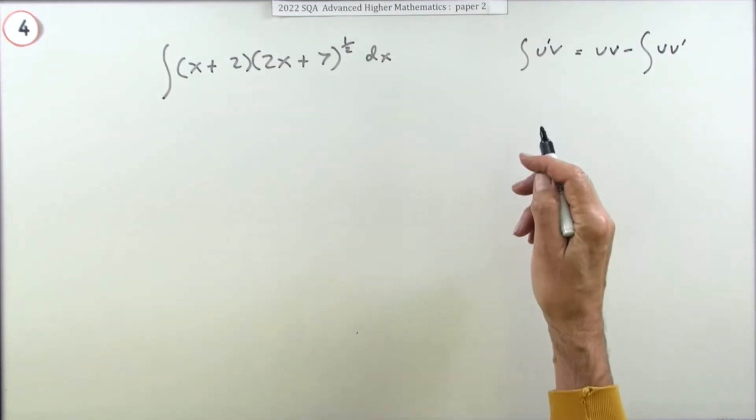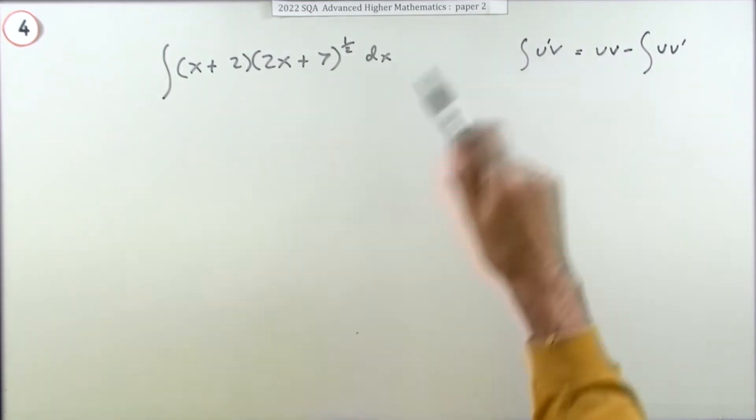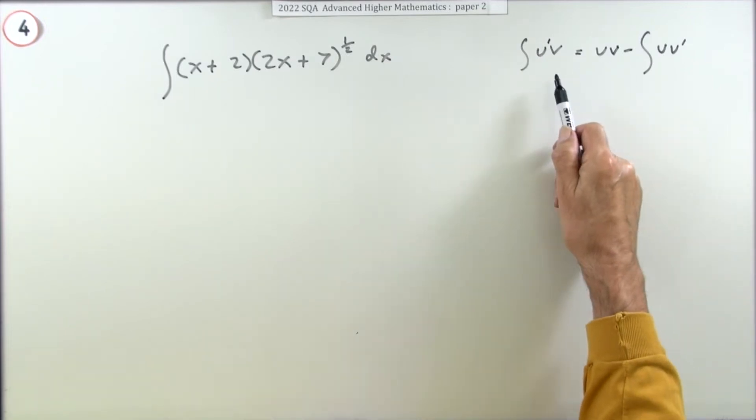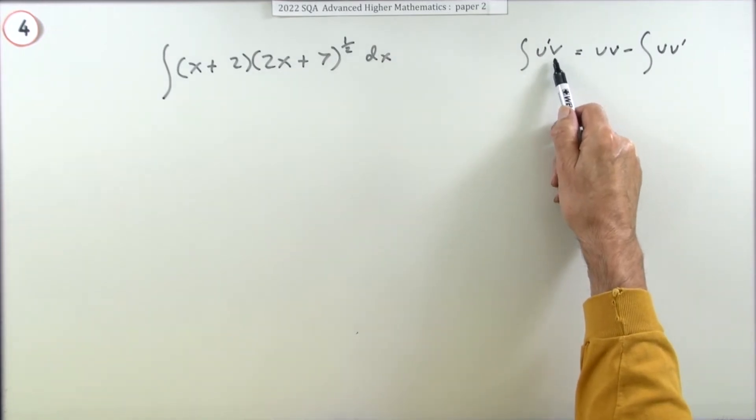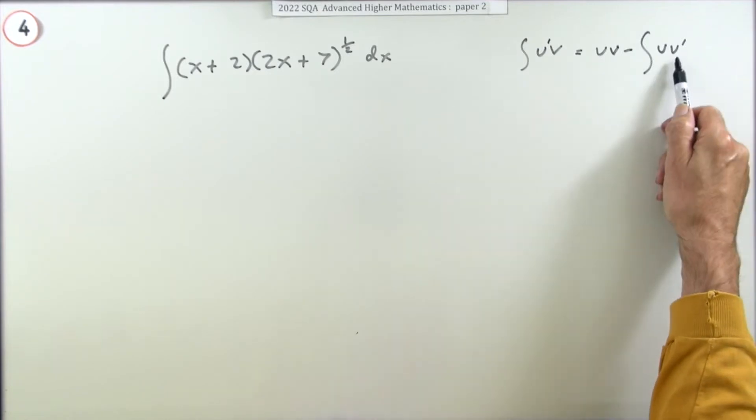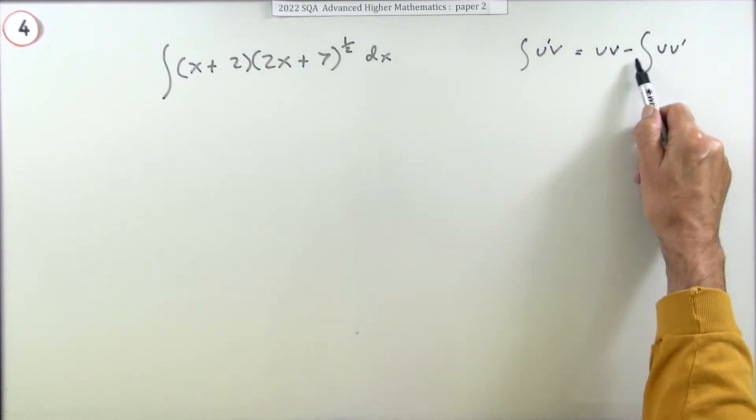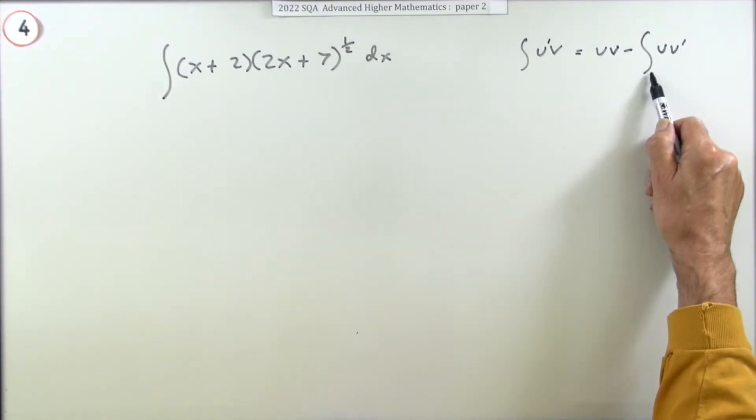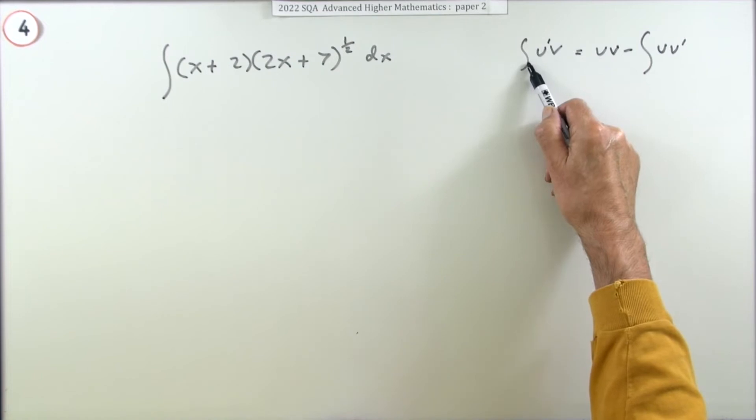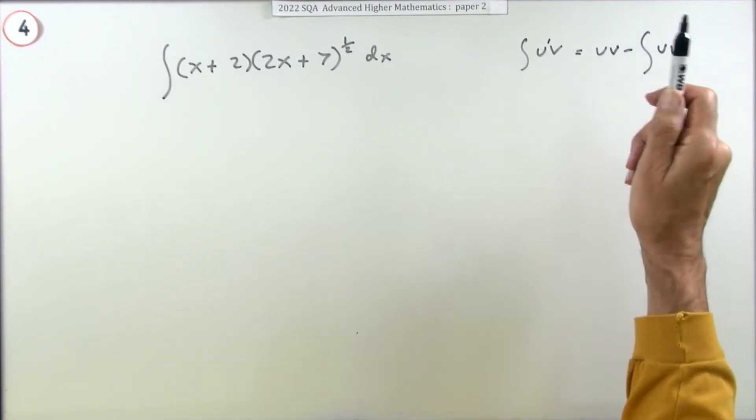You may well put that down and then identify your u dash and v and so on. But essentially what you're doing is you're identifying something that can be integrated and identifying something which is the other one which can be differentiated, hopefully differentiated to form something simpler than what you had to start with. Because there'd be no point in getting another integral if that was actually worse than the one you had.